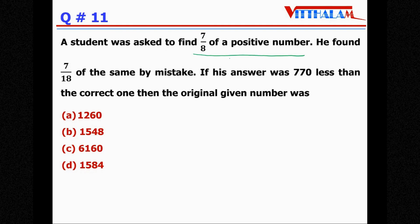Question 11: A student was asked to find seven-eighths of a positive number. He found seven-eighteenth of the same by mistake, and his answer was 770 less than the correct one. Find the original number. Let's say the original number is x.